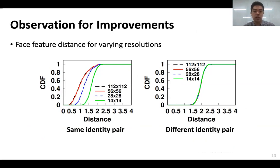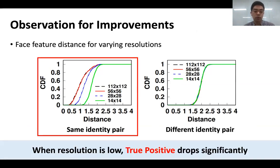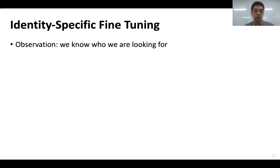Our baseline ICN achieved some accuracy gain, but we sought further improvement. We dug deeper to see how feature distance changes with resolution for same-identity and different-identity pairs. Interestingly, when resolution drops, the feature distance between a same-identity face pair drops significantly, whereas that of different-identity pairs remains about the same. This means the challenge of low-resolution face recognition mostly comes from difficulty accepting true positives rather than denying false negatives. Our observation is that in most usage scenarios, we know who we are looking for and have plenty of reference photos of the target that we can utilize to fine-tune the ICN.